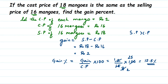So 12.5% is the profit percentage. The key takeaway is: make the unit the same by assuming the cost price of one mango equals 1 rupee, then solve. If you have other questions or doubts, drop a comment. Thank you so much for watching.